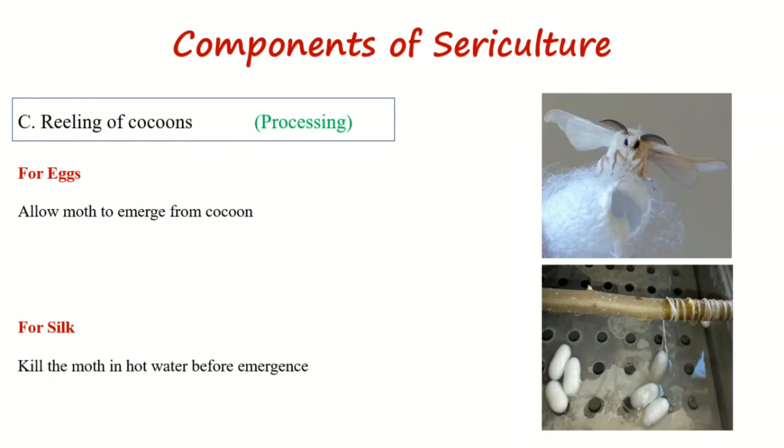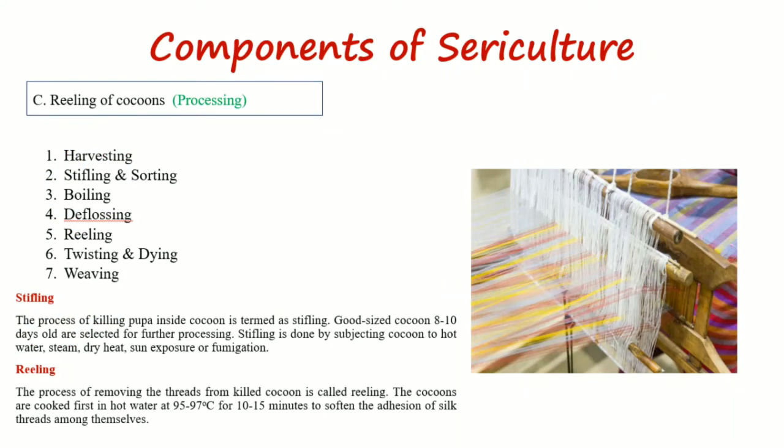Next is the reeling of cocoons or processing. Processing depends upon the purpose of sericulture. If you have performed sericulture for the purpose of getting eggs, then allow the moth to emerge from the cocoon and lay eggs after mating. If you have performed sericulture for the purpose of silk, then kill the moth in hot water before emergence and perform further processing of the cocoon.